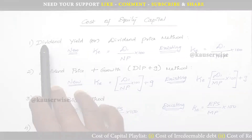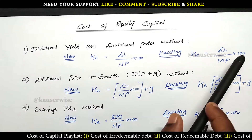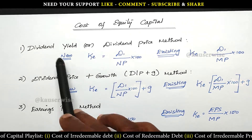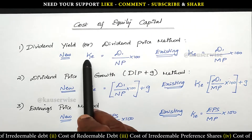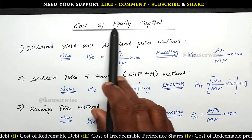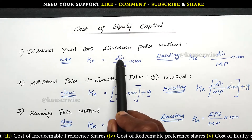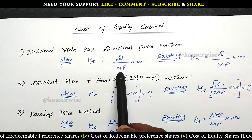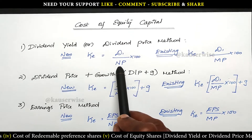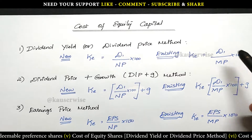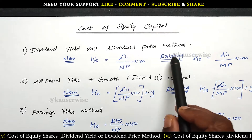Now let's see the first model — the dividend yield or dividend price method. We have 2 different formulas: one for new shares and one for existing shares. For new shares, the formula is KE = D1 divided by NP into 100, where D1 means dividend per share and NP means net proceeds per share. For existing shares, instead of NP, you take the market price per share: KE = D1 divided by market price per share into 100.